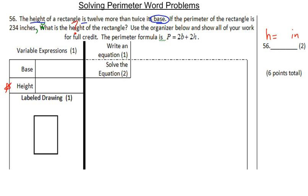So, use the organizer below for full credit. In that first sentence, the height of the rectangle is 12 more than twice its base. It means I do not know the base. The base is X. And the height is 12 more than twice the base. So, you do 2 times the base for twice, and then 12 more.